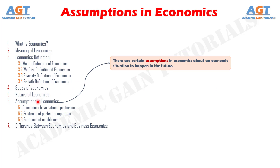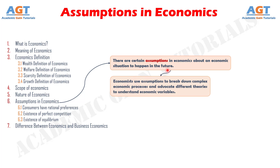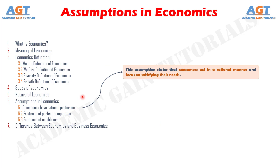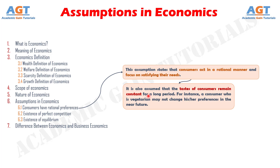Now let's discuss about some assumptions in economics. There are certain assumptions in economics about an economic situation to happen in the future. Economists use assumptions to break down complex economic processes and advocate different theories to understand economic variables. Three important assumptions are: consumers have rational preferences, existence of perfect competition, and existence of equilibrium. The first assumption states that consumers act in a rational manner and focus on satisfying their needs. It is also assumed that the tastes of consumers remain constant for a long period — for instance, a consumer who is vegetarian may not change his or her preferences in the near future.